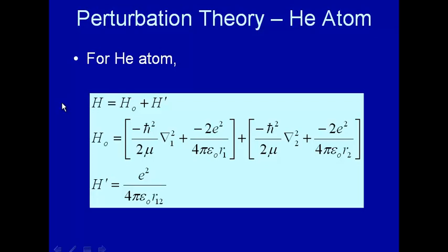Now that we've developed perturbation theory, let's apply it to the helium atom. The helium atom could not be solved exactly using the Schrödinger equation — it's a three-body problem. The problem came when you have the electron-electron interaction, that Coulombic repulsion between the electrons, and that screwed everything up.